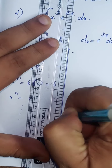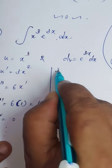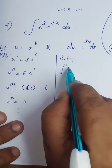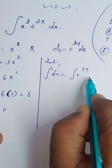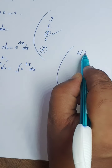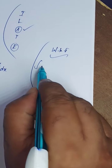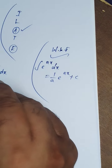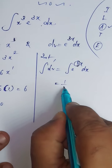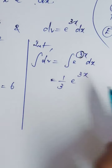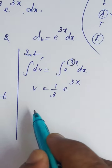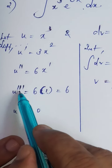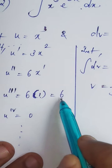From dv we have to find v, so we integrate both sides — continuous differentiation on one side and continuous integration on the other. We know that integral of e^(ax) dx = (1/a)·e^(ax) + c. Here a = 3, so v = (1/3)·e^(3x). Since u'''' = 0, we need to find v up to v3 only.